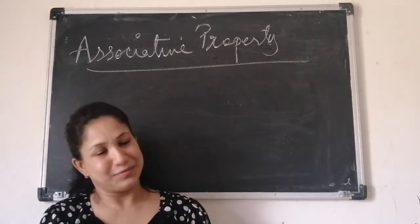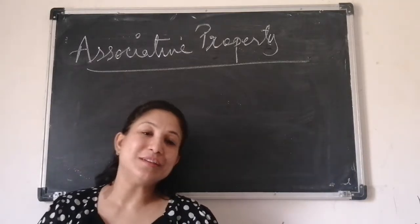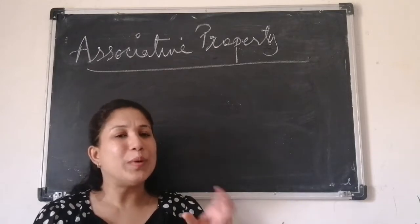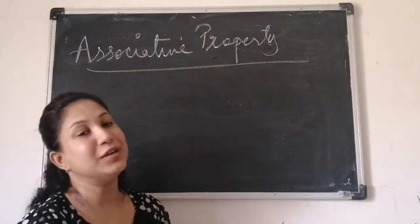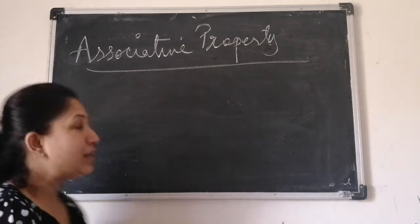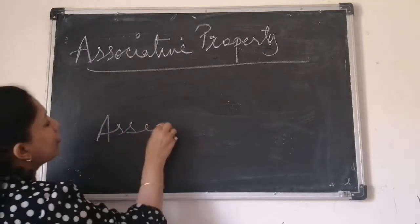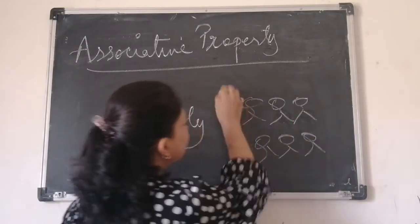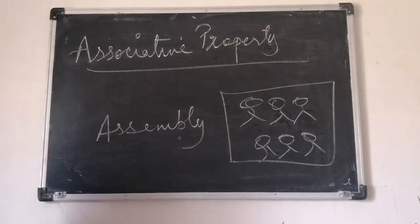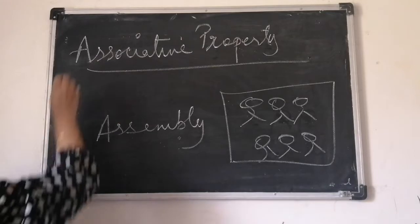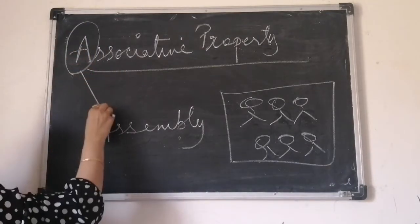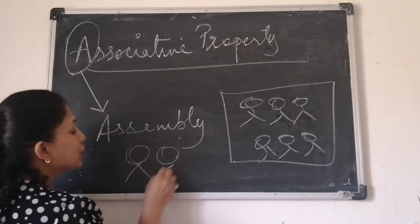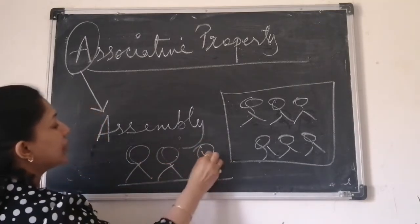Welcome back children to our maths class. Today we are going to discuss about associative property. Let us relate the associative word with some word that will always help us in future to understand what the property is about. You have seen in your morning assembly, so many children are gathered to attend the assembly. Relate every time I say associative — this A of associative — with A of assembly, and keep in mind that it is not about two children, it is about more than two children.